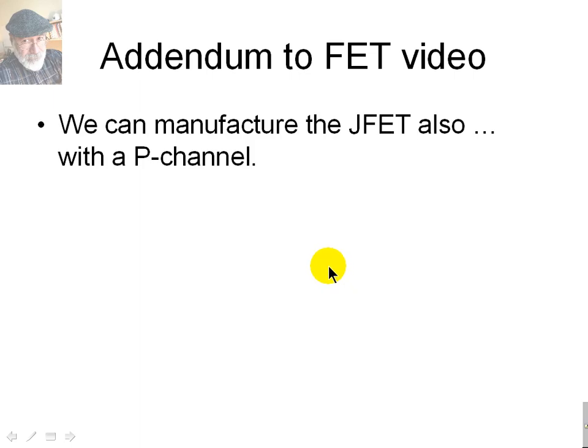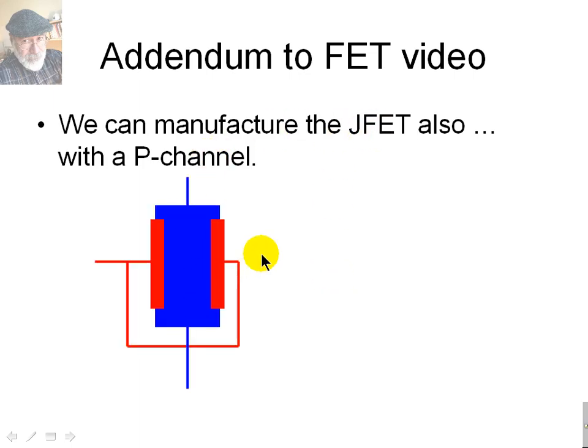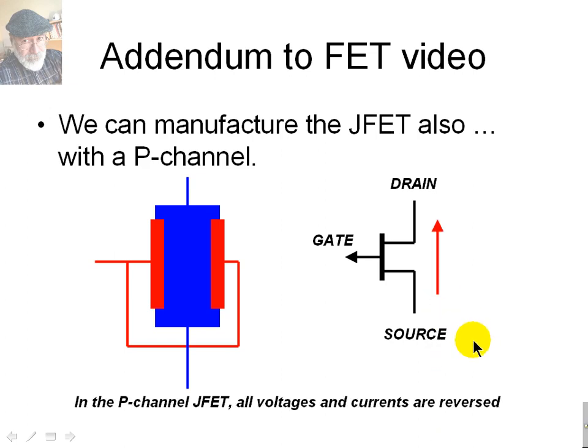We could also manufacture the JFET using a P-channel, and the symbol has a reversed arrow in the gate connector. The direction of flow of current in the channel is reversed. The P-channel JFET is so that all voltages and all currents are reversed in direction and polarity.